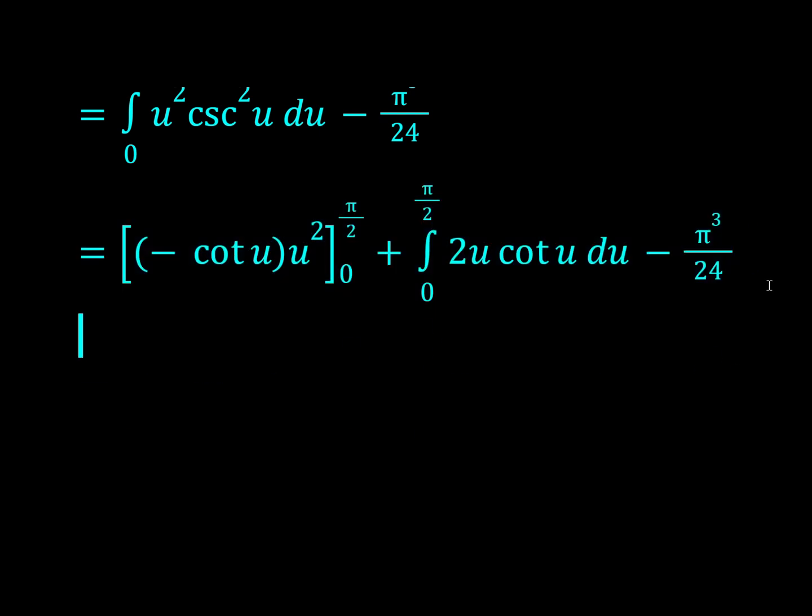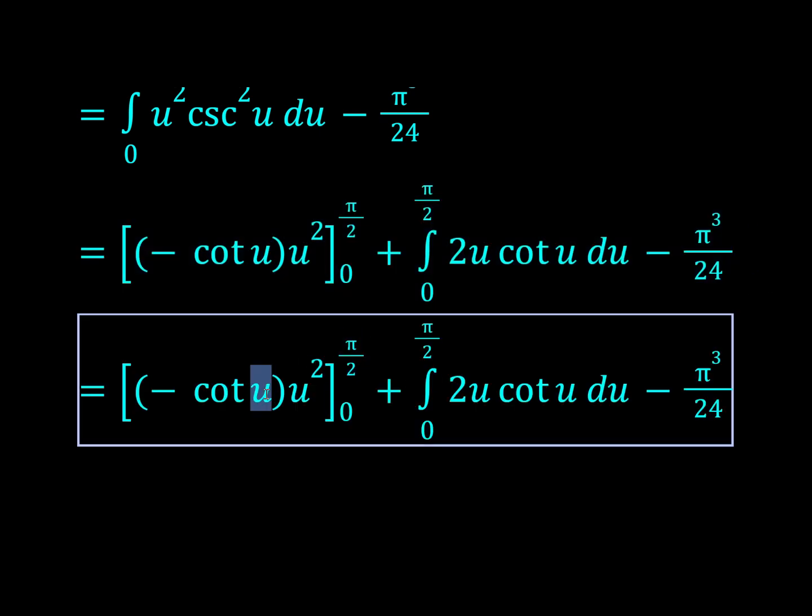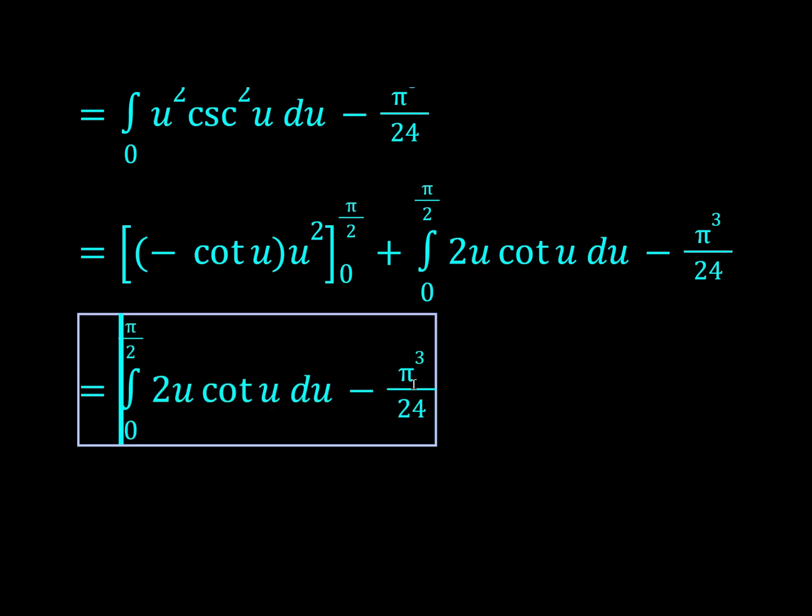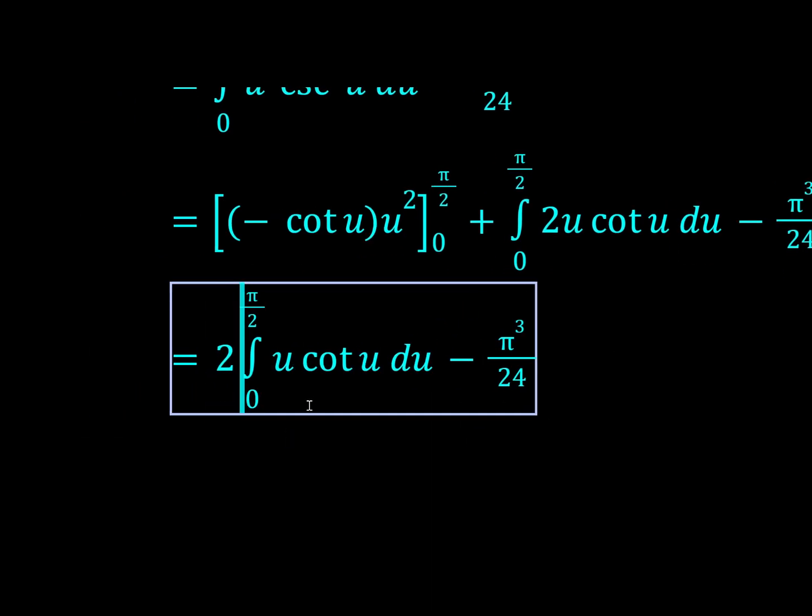Now let's just see what happens when we substitute in pi over 2 and 0 here. Well cot pi over 2 is 0, and when we sub in 0, we get cot 0 times 0, and cot 0 is cos 0 over sin 0, so you might think that doesn't work, but the limit is probably just going to be 0.